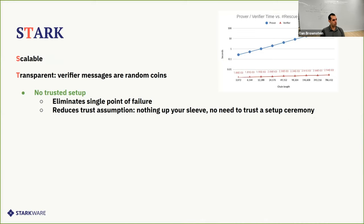For example, proving the computational integrity of 100k rescue hash invocations - rescue is the chosen hash function - it takes less than 10 seconds to generate the proof and takes less than three milliseconds to verify. And this is really, really fast. So that was scalability. It's also a transparent system, meaning that all verifier messages are random points. There is no trusted setup, not per application, not even a universal trusted setup as we heard in the previous talks. There is just no trusted setup. It's really great thing to have in your proof system.